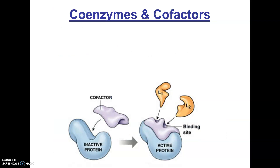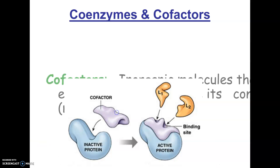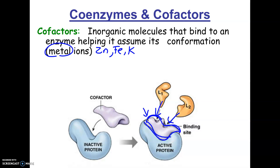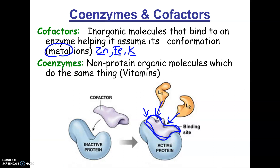Kind of the opposite of inhibitors are what are called coenzymes and cofactors. These are things that help enzymes take on the correct shape. A cofactor is typically a metal ion — for example, zinc, iron, or potassium. If they tell you the thing helping the enzyme have the correct shape is an element, it's a cofactor. This enzyme is not activated until this thing binds to it and the enzyme takes on the correct shape. If they say it's a vitamin, then it's a coenzyme. They pretty much do the same thing — they help certain enzymes take on the correct shape so the enzymes can react with their substrates to form products.